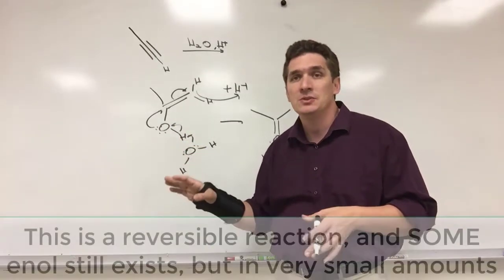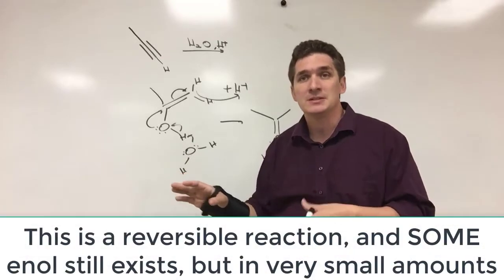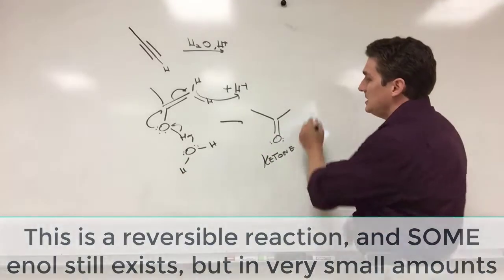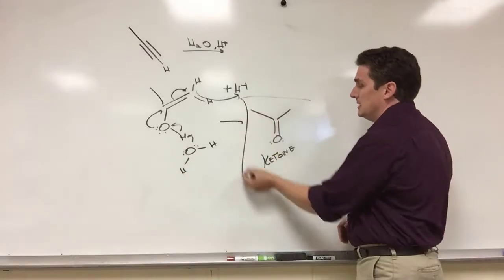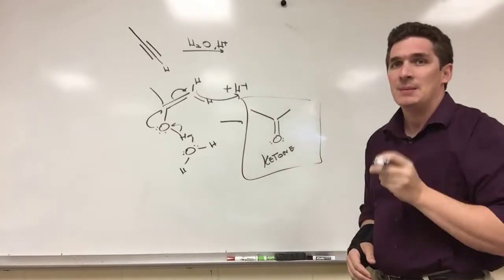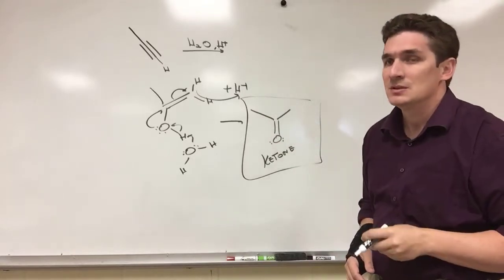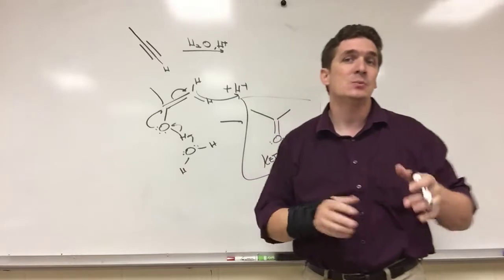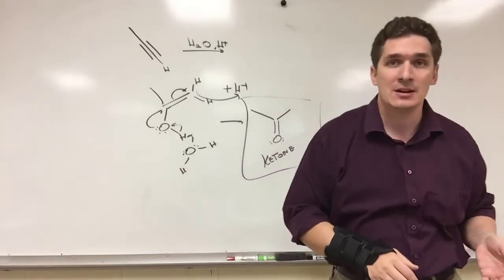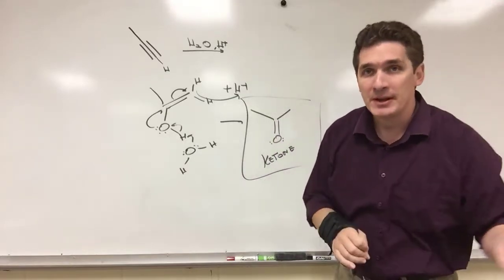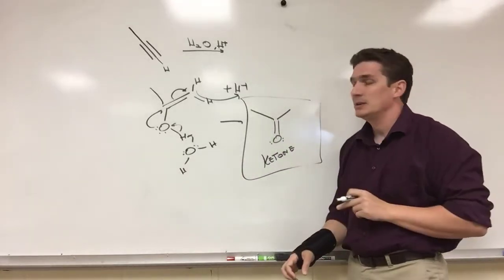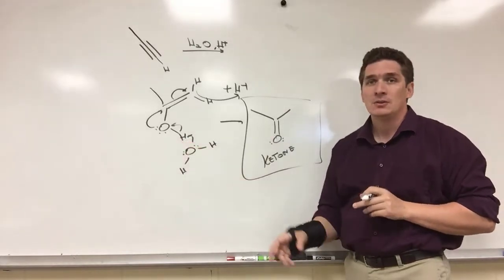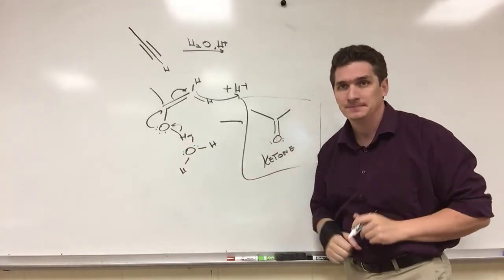Some enol does exist in trivially small amounts, and we know it occurs based on some of the reactions we observe, but this ketone is actually going to be the predominant product. So when we add water to a triple bond — unlike with alkenes where we produce an alcohol — the plot twist here is that we actually create a ketone by going through an enol first.